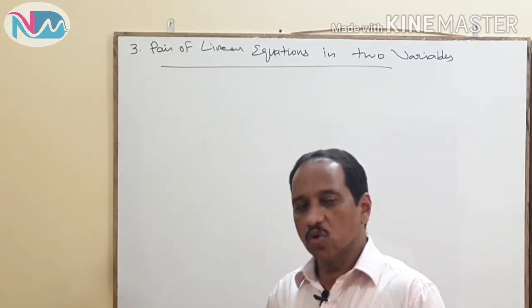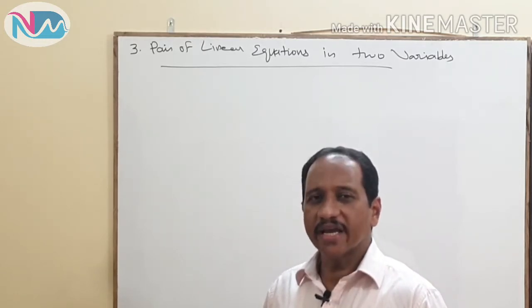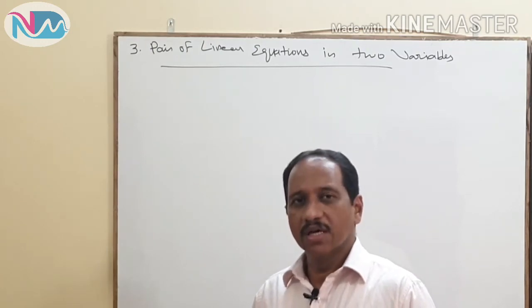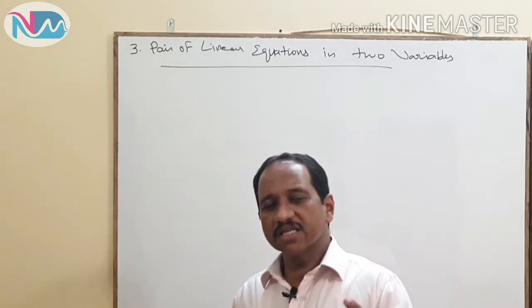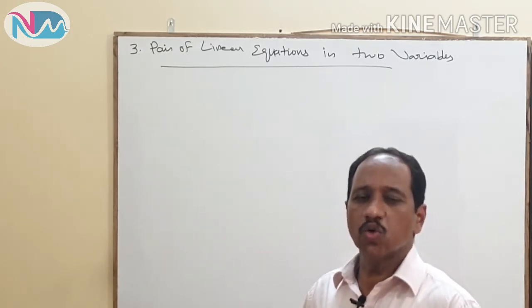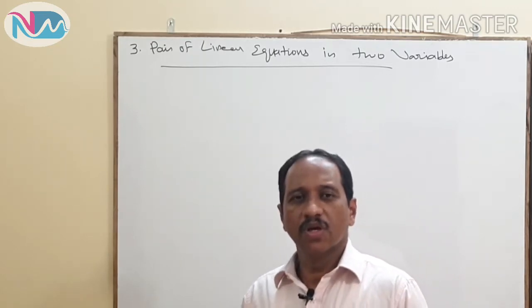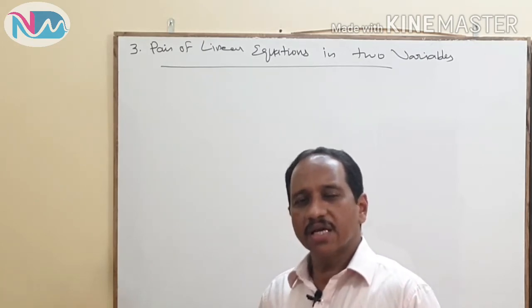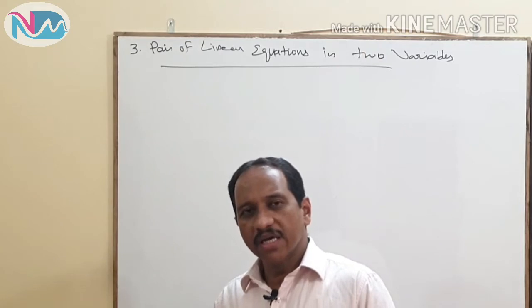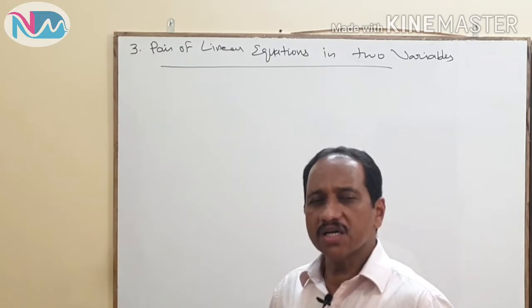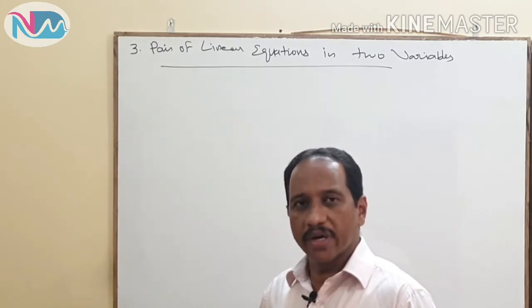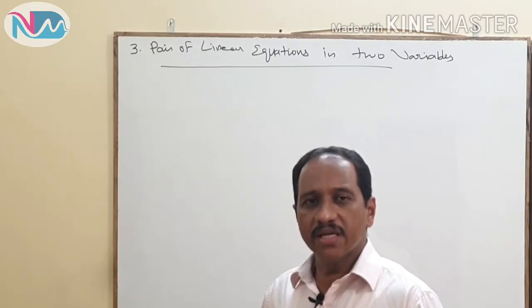You know what is a linear equation in two variables. An equation which contains two variables with the highest power 1 is called a linear equation in two variables. You also know that a linear equation in two variables has infinitely many solutions, and its graphical representation is a straight line. If you draw the graph in a Cartesian plane, you get a straight line passing through many points, where the x and y coordinates of all those points are solutions of the respective linear equation.